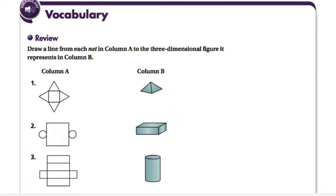In the first column we want to match what the net is to the actual three-dimensional figure on the right, so the first one goes straight across. The second one represents a cylinder, and then the third one would be the box.